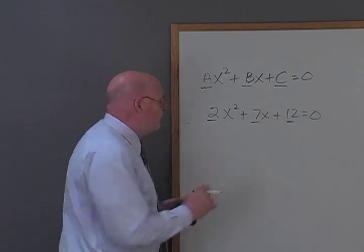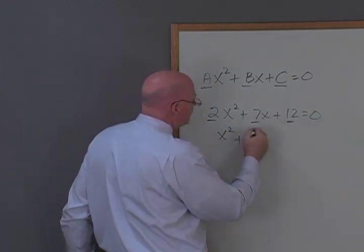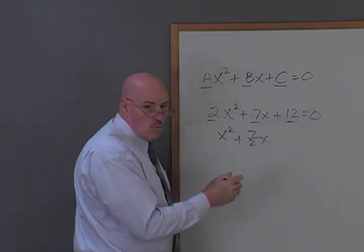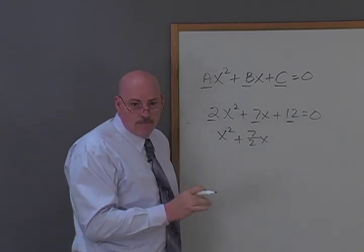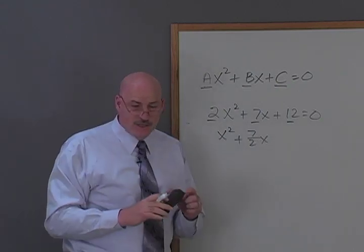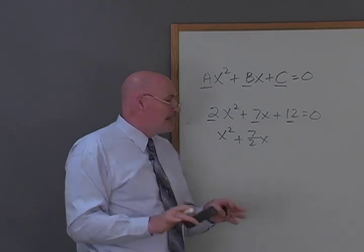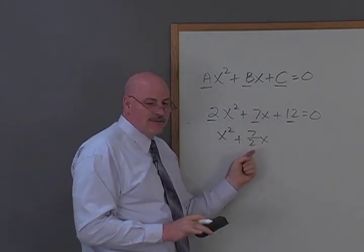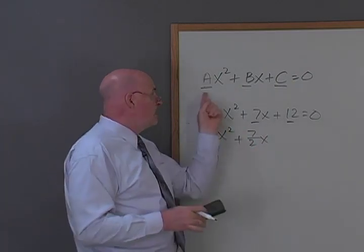If you had x squared, let's say we divide through by 2, and we had 7 halves x, and we move the 12 over here. Well, how do we find this third term right here? Remember, you cut this in half and then square it. So, what we're going to do is we're going to do exactly the same thing that we've been doing, except instead of using numbers and dividing by 2 and then taking 7 halves and making 49 fourths and all that kind of thing, we're going to use the letters.